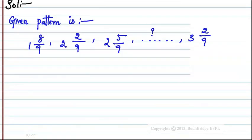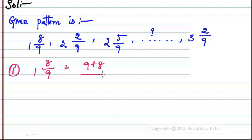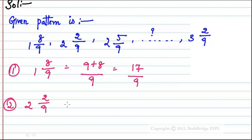All the terms are in the form of mixed fractions. The first term, 1 and 8/9, can be written as (9 + 8)/9, which is 17/9. The second term, 2 and 2/9, is (18 + 2)/9, which equals 20/9.